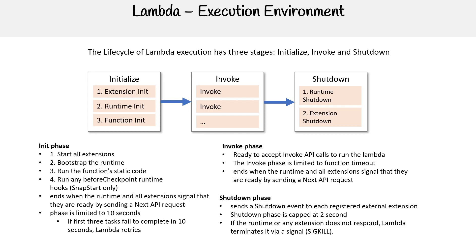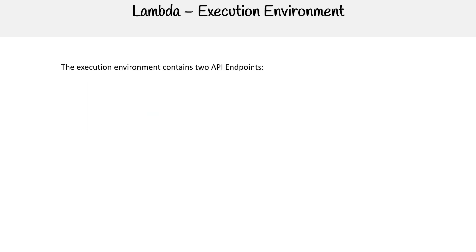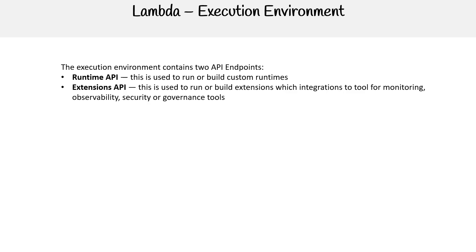Why would we want to know about this? If we are trying to write Lambda extensions, or if we are creating custom runtimes, then you need to understand all this. The execution environment contains two API endpoints: we have the Runtime API, used to build custom runtimes, and the Extensions API, used to build extensions that integrate with monitoring, observability, security, or governance tools.